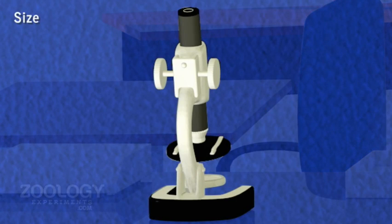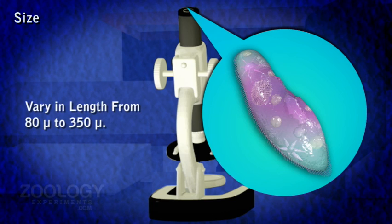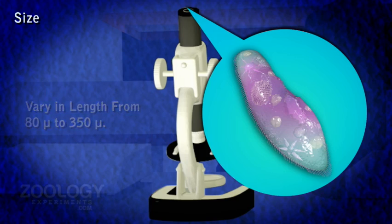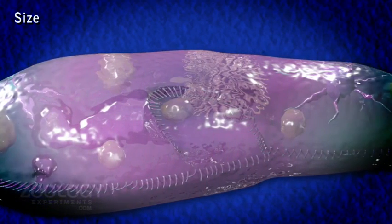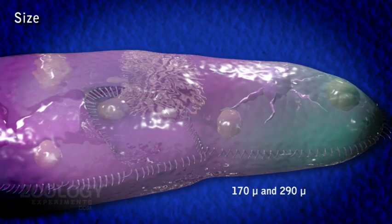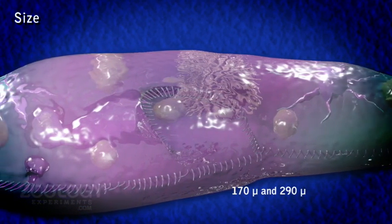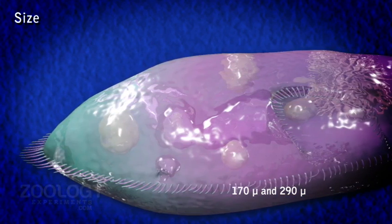Size: Paramecium is a microscopic elongated organism. Its species vary in length from 80 microns to 350 microns, and can be observed with the naked eye as a white spot. The largest species, Paramecium caudatum, measures between 170 microns and 290 microns. The greatest diameter of the cylindrical body is about two-thirds of its entire length.